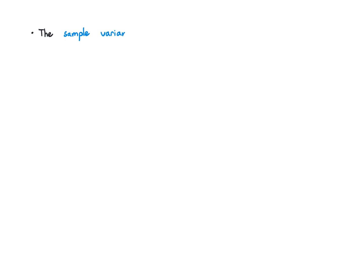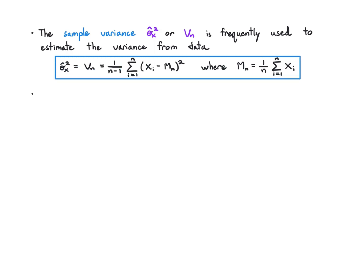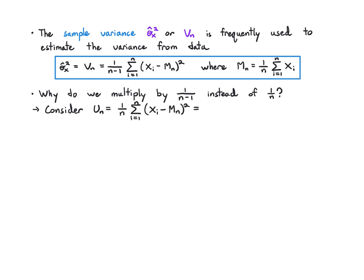Finally, let's put our techniques to use to understand the sample variance, sigma-hat-squared or V_n, which is used to estimate the variance from data. We usually write V_n as 1/(n−1) times the sum of (x_i − m_n)^2, where m_n is 1/n times the sum of x_i. Why do we multiply by 1/(n−1) instead of 1/n? Let's try 1/n and see what happens. Replacing 1/(n−1) with 1/n and using something like the alternate variance formula, I replace the sum over (x_i − m_n)^2 with the sum of x_i^2 minus n*m_n^2.